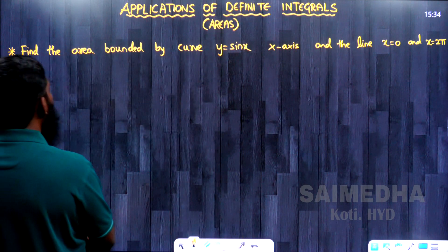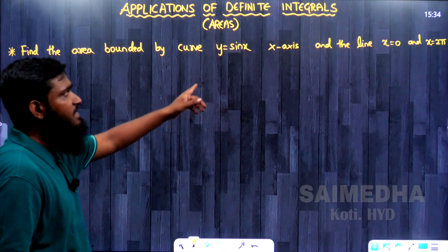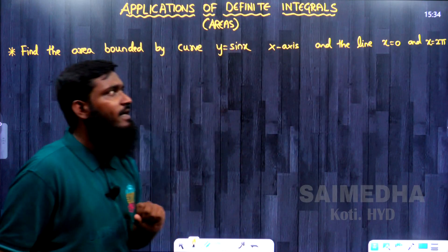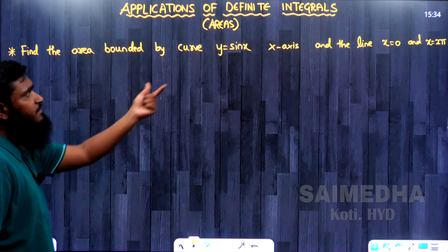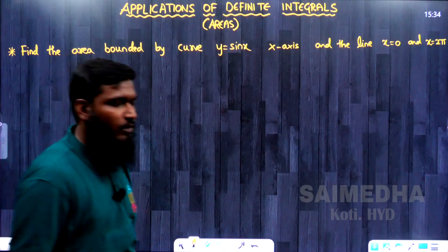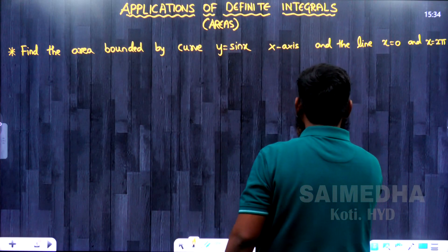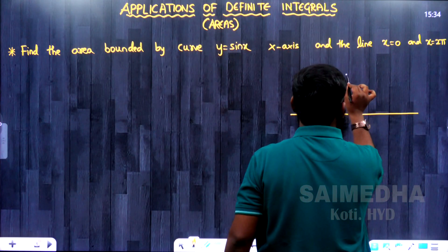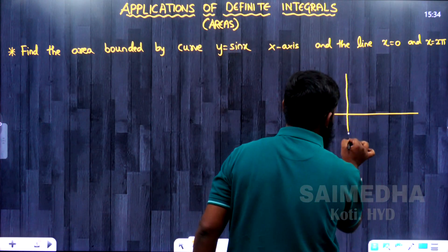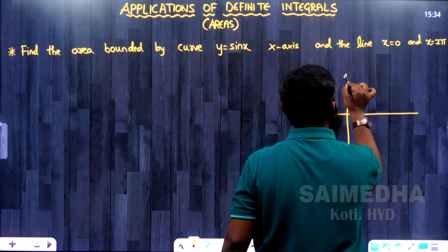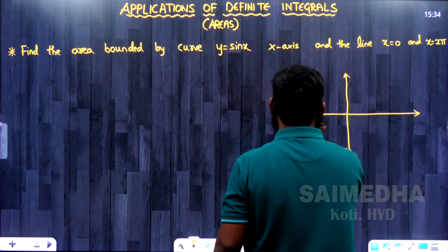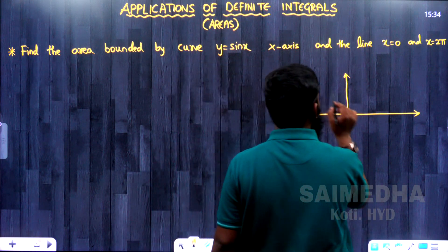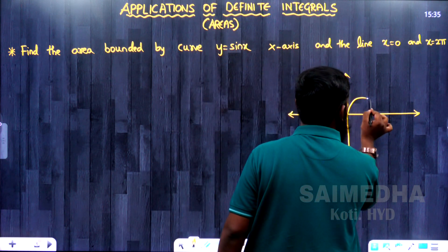Now let us see the next question: find the area bounded by the curve y = sin x, the x-axis, and the lines x = 0 and x = 2π. We are having the function sin x, so let us recall the graph for sin x. Taking the x-axis and y-axis, we will be having this type of graph for sin x.